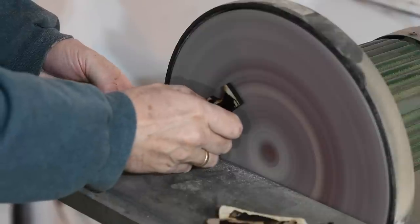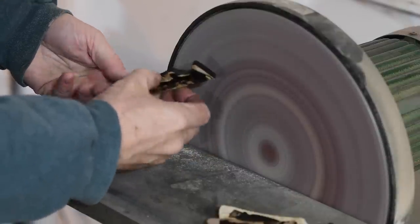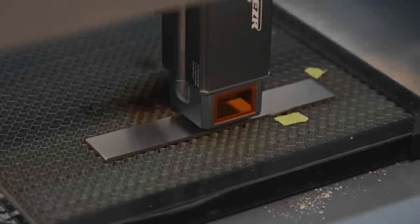Now to the disc grinder to flatten the scales. Of course, you could do this by hand on a piece of sandpaper. In fact, honestly, it works better that way.